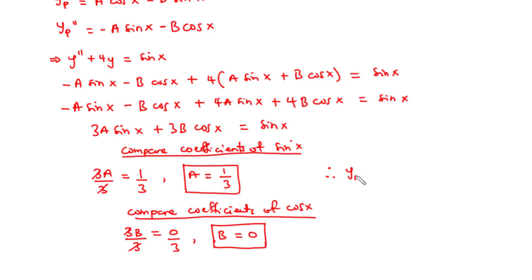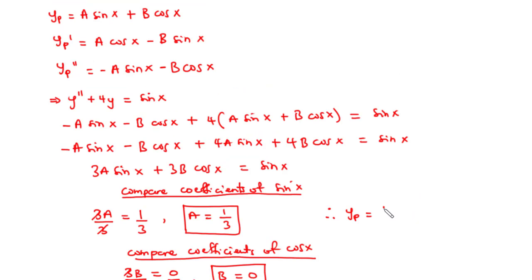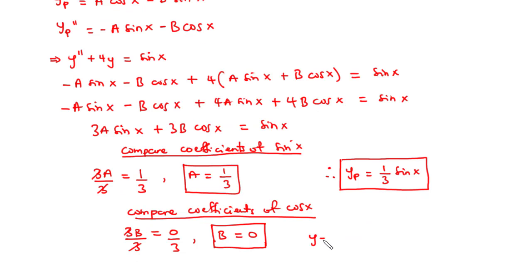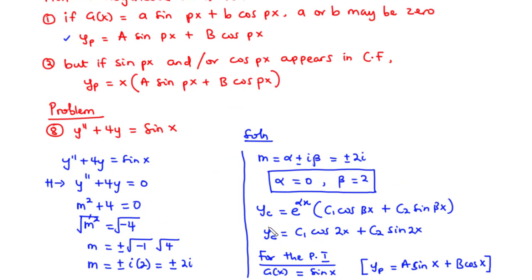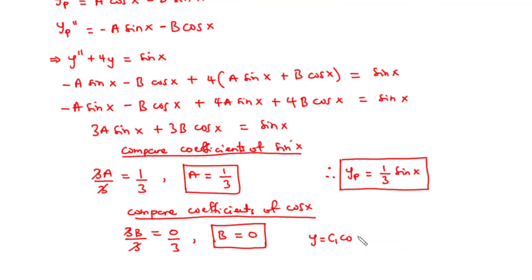Therefore, with a = 1/3 and b = 0, the particular integral is yp = (1/3)·sin(x). Since b = 0, the cosine term vanishes. The general solution y is therefore yc + yp, giving y = c1·cos(2x) + c2·sin(2x) + (1/3)·sin(x).